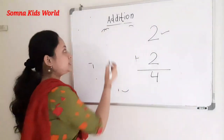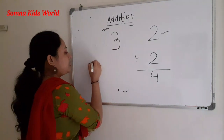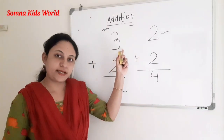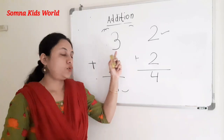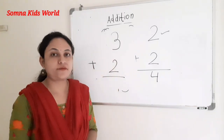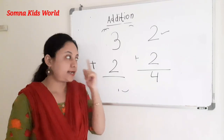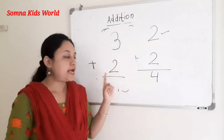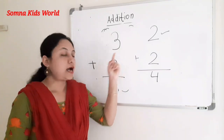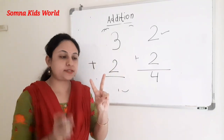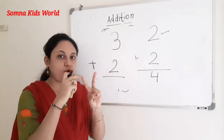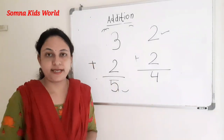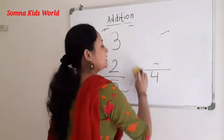Let me show you another example using the mind method: three plus two. What is the first number? It's number three — keep three in your mind. Now with your fingers count the second number, which is two: four, five. So the answer is five. Three plus two equals five.